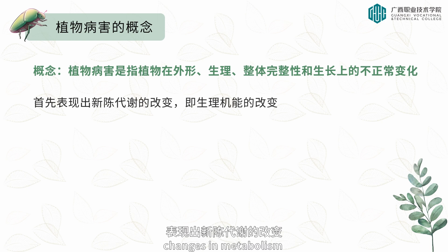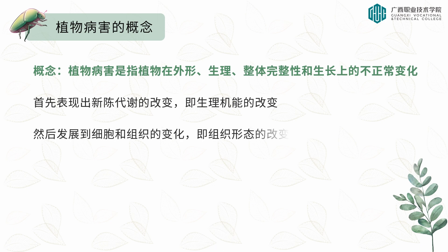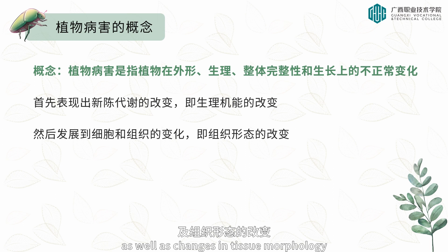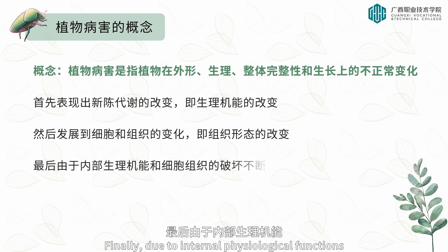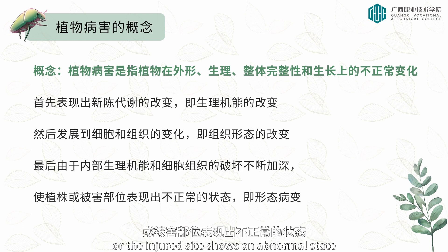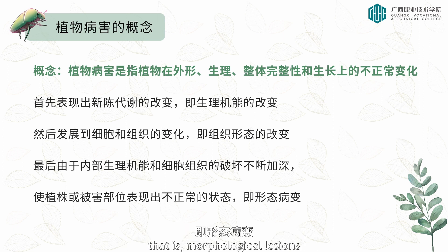First, changes in metabolism and physiological functions show, then they develop into changes in cells and tissues, as well as changes in tissue morphology. Finally, due to internal physiological functions and the destruction of cell tissue continuing to deepen, the plant or the injured site shows an abnormal state — that is, the morphological lesions.